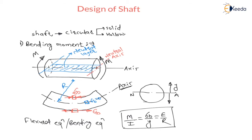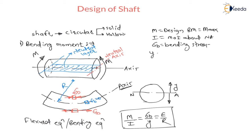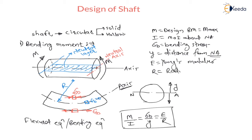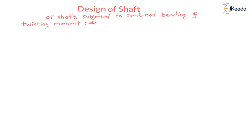In this equation: M is the design bending moment, that is the maximum bending moment in the component; I is the moment of inertia about the neutral axis; σB is the bending stress; Y is the distance from the neutral axis (upward or downward); E is Young's modulus (modulus of elasticity); and R is the radius of curvature.